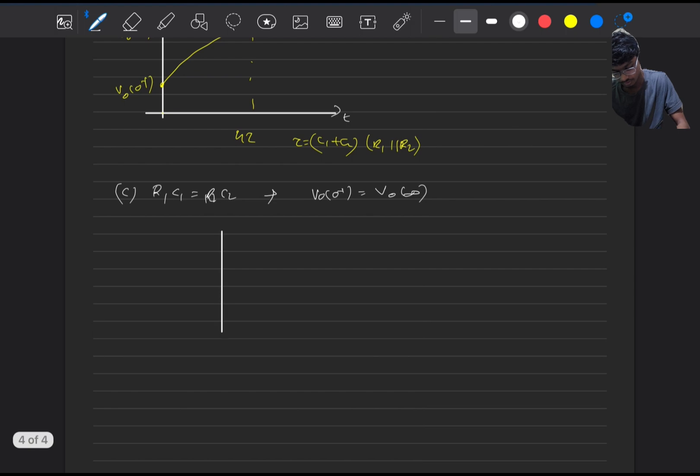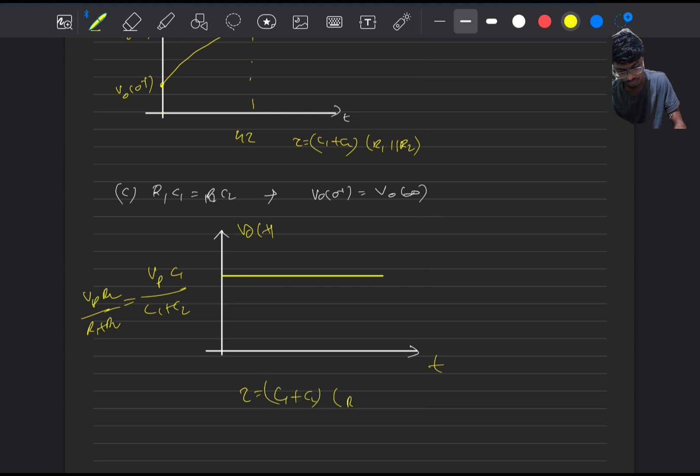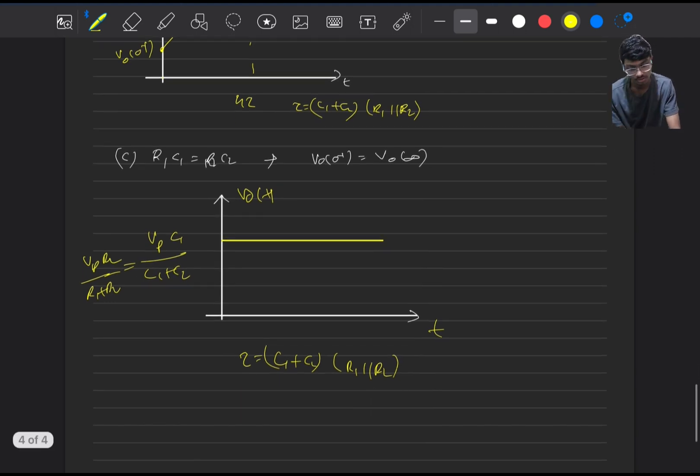So the circuit won't at all charge or discharge, it will settle immediately to a constant value which equals Vp into C1 divided by C1 plus C2 or Vp into R2 divided by R1 plus R2. Now my question is what will be the time constant for this circuit? If you think about it, this won't be the same because for this condition it's instantly settling, following the input only with no time delay. So it will settle immediately and the time constant for the circuit will be zero.